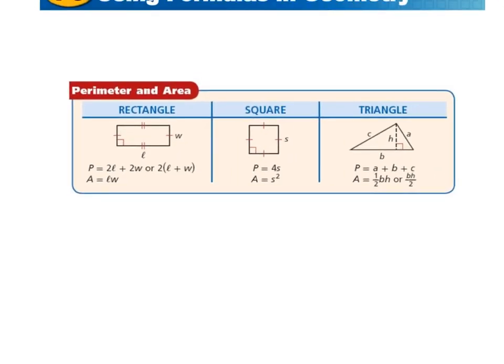The formula for the perimeter of a rectangle is 2L plus 2W — that's 2 times the length plus 2 times the width — or we could write it as 2 times (L plus W). The area of a rectangle is simply length times width.